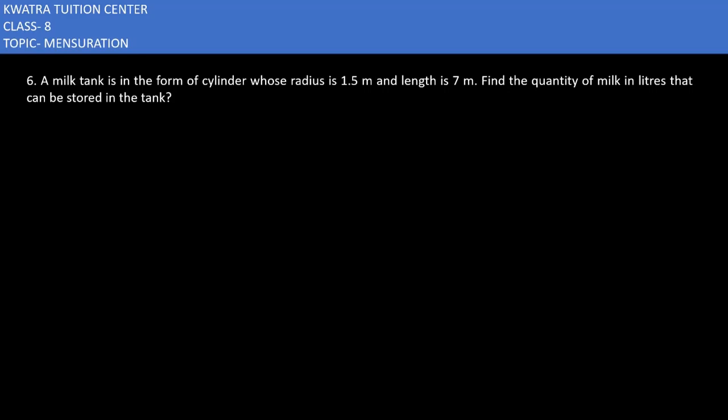The next problem says a milk tank is in the form of a cylinder whose radius is 1.5 meters and length is 7 meters. Find the quantity of milk in liters that can be stored in the tank. You have a radius of 1.5 meters and a height of the cylinder is 7 meters.